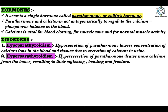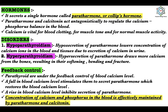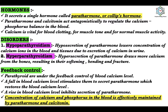Hyperparathyroidism — hypersecretion of parathormone — draws more calcium from the bones, resulting in their softening, bending, and fracture; this is called osteoporosis and is common in women who have reached menopause. Parathyroid glands are under the feedback control of blood calcium levels: a fall in blood calcium stimulates secretion of parathormone, while a rise inhibits it. The concentration of calcium and phosphorus in the blood is effectively maintained by the antagonistic actions of parathormone and calcitonin.